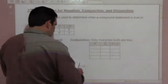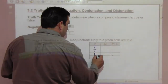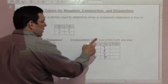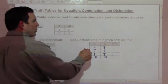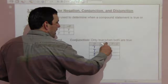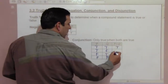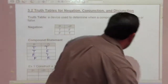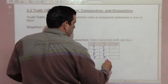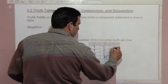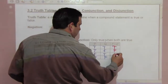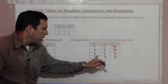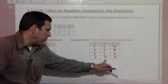For a conjunction — true, true, false, false for P and true, false, true, false for Q — a conjunction is only true when both parts are true. So P and Q is only true when both P and Q are true: that's the first case. The other cases give false, false, false, because only one is true at most, and in the last case both are false.